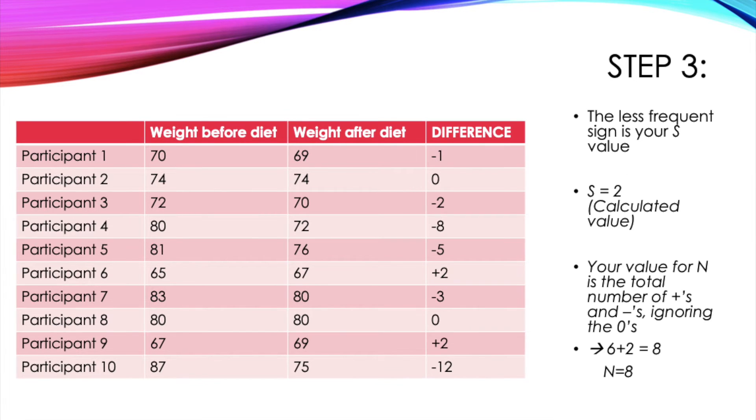The next thing you need to do is assign your S and N values. So your S value, also known as your calculated value, is simply the least frequent sign. Our least frequent sign was the positive sign and we only had two of these, so our S value in this case is 2.